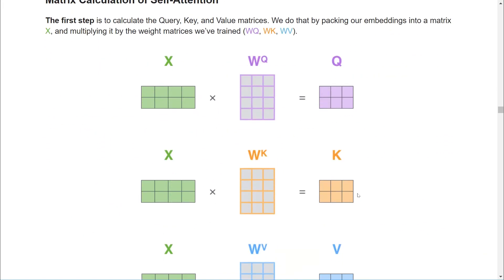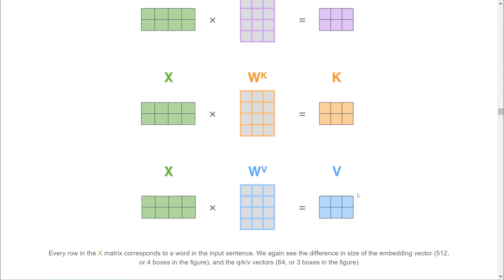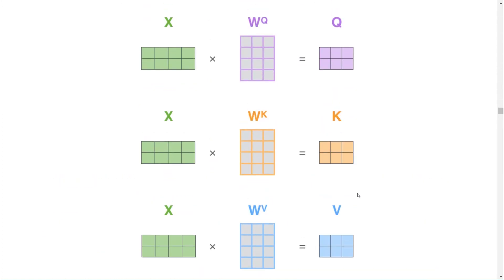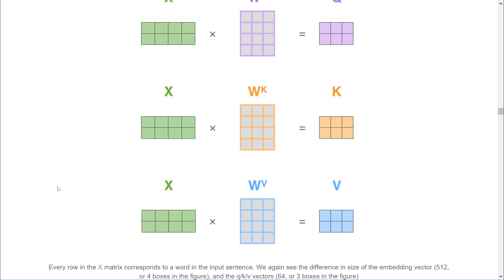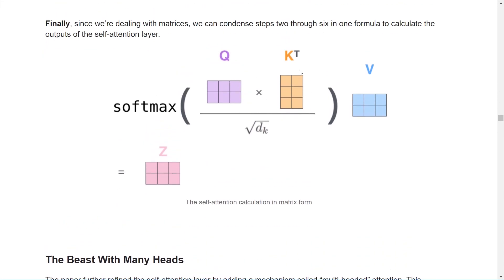Now by stacking all the input word embeddings from top to bottom in a matrix, we can make the calculation even faster. Step one is simply x times the Q weights equals Q, x times the K weights equals K, x times the V weights equals V. Step two is the softmax of Q times K transposed over the square root of key dimensions, times V equals the output Z.